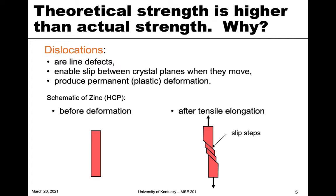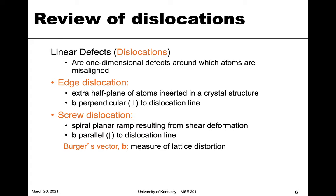Remember edge and screw dislocations. Edge dislocations are linear defects — one-dimensional — in which atoms are misaligned, visualized as an extra half plane of atoms inserted into the crystal structure. The Burgers vector B is perpendicular to the dislocation line. The screw dislocation is viewed as a spiral planar ramp resulting from shear deformation, and its Burgers vector is parallel to the dislocation line. The identity of these two is defined by the relationship between the Burgers vector, a measure of lattice distortion, and the dislocation line.